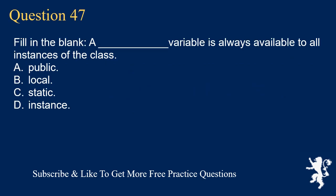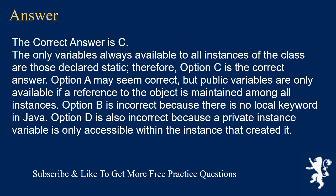Question 47. Fill in the blank: a ___ variable is always available to all instances of the class. A. public. B. local. C. static. D. instance. The correct answer is C. The only variables always available to all instances of the class are those declared static. Option A may seem correct, but public variables are only available if a reference to the object is maintained. Option B is incorrect because there is no local keyword in Java. Option D is incorrect because a private instance variable is only accessible within the instance that created it.